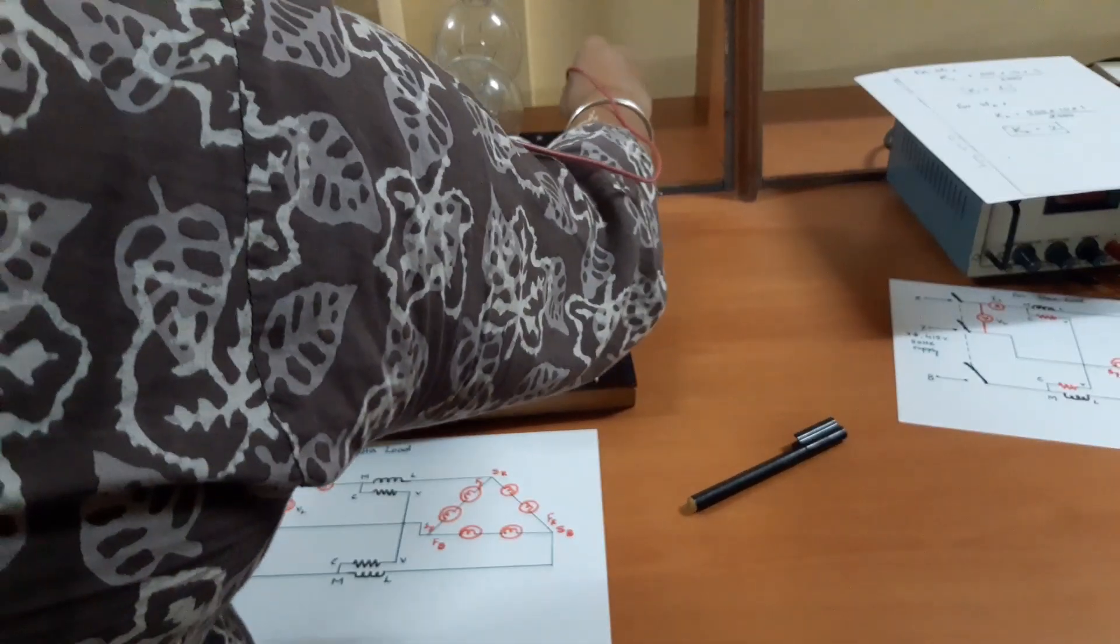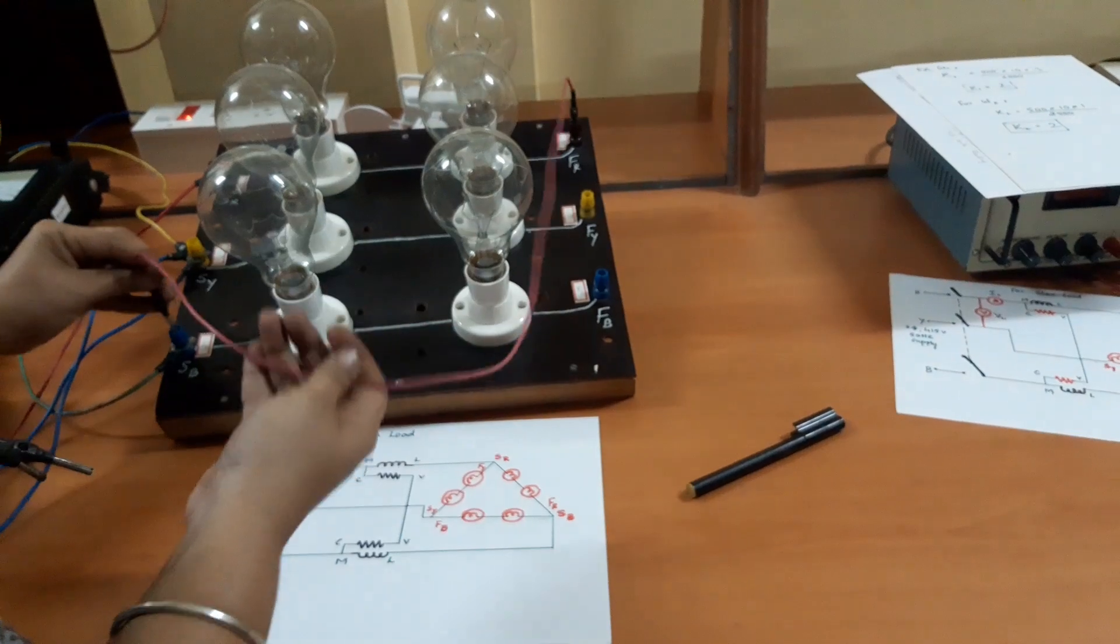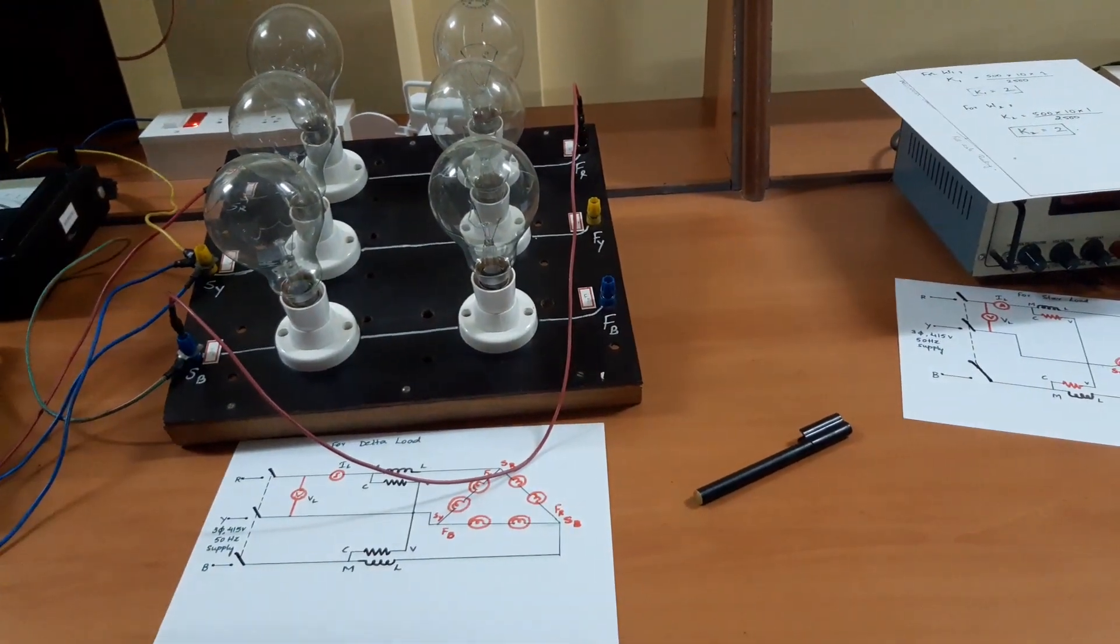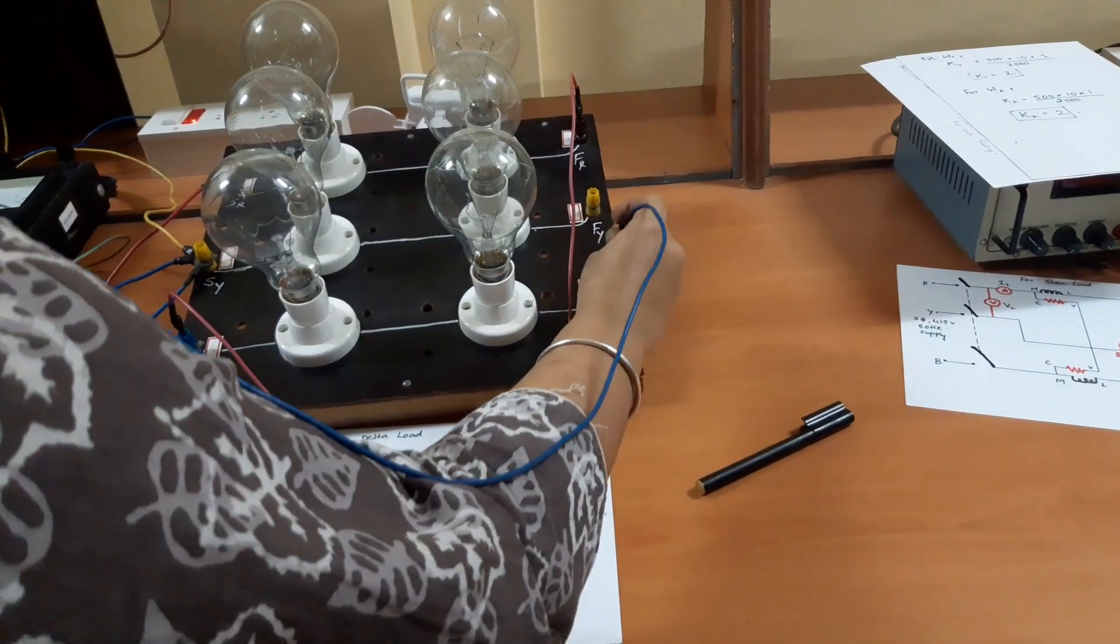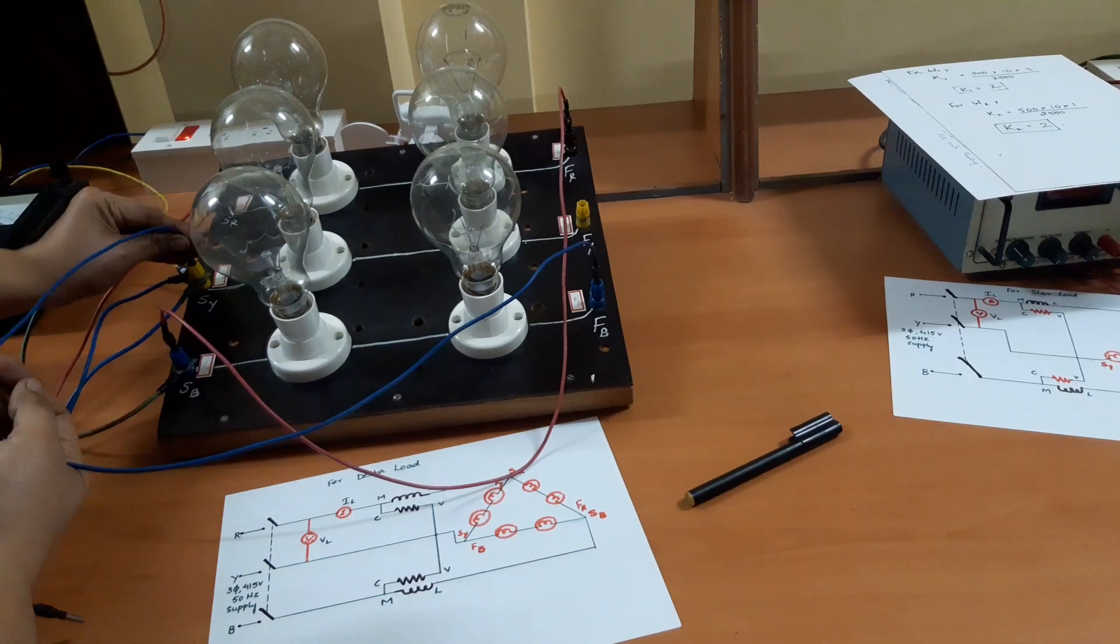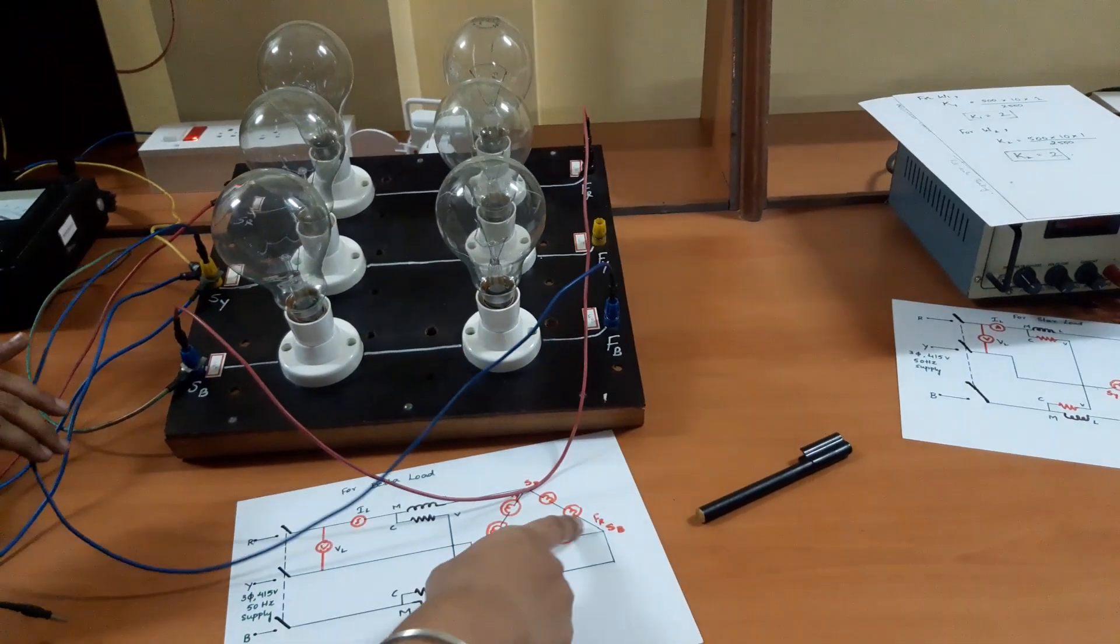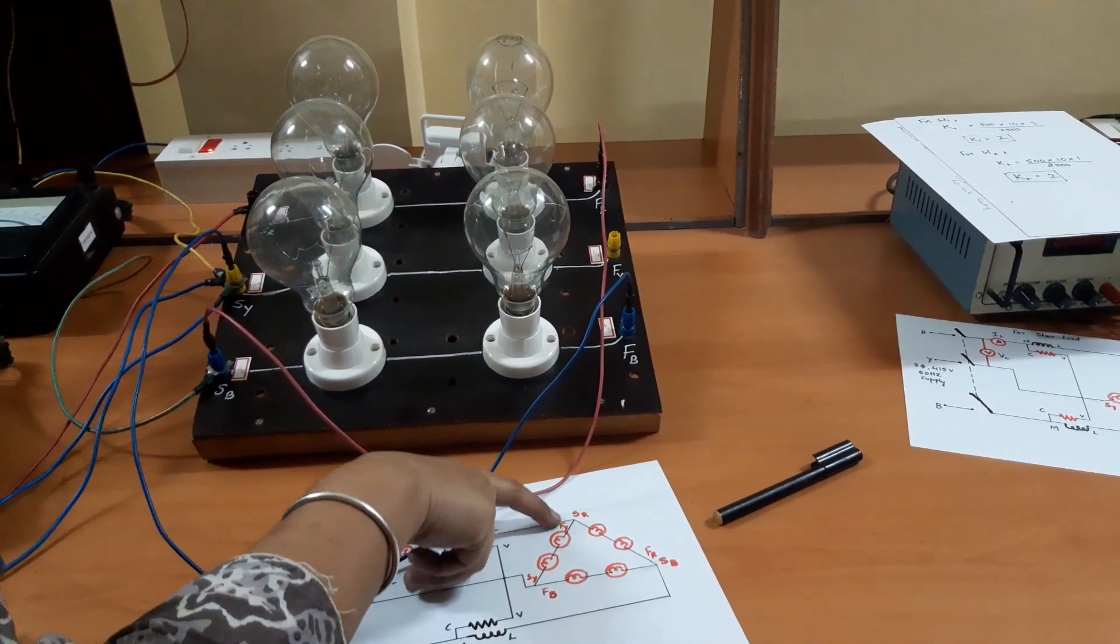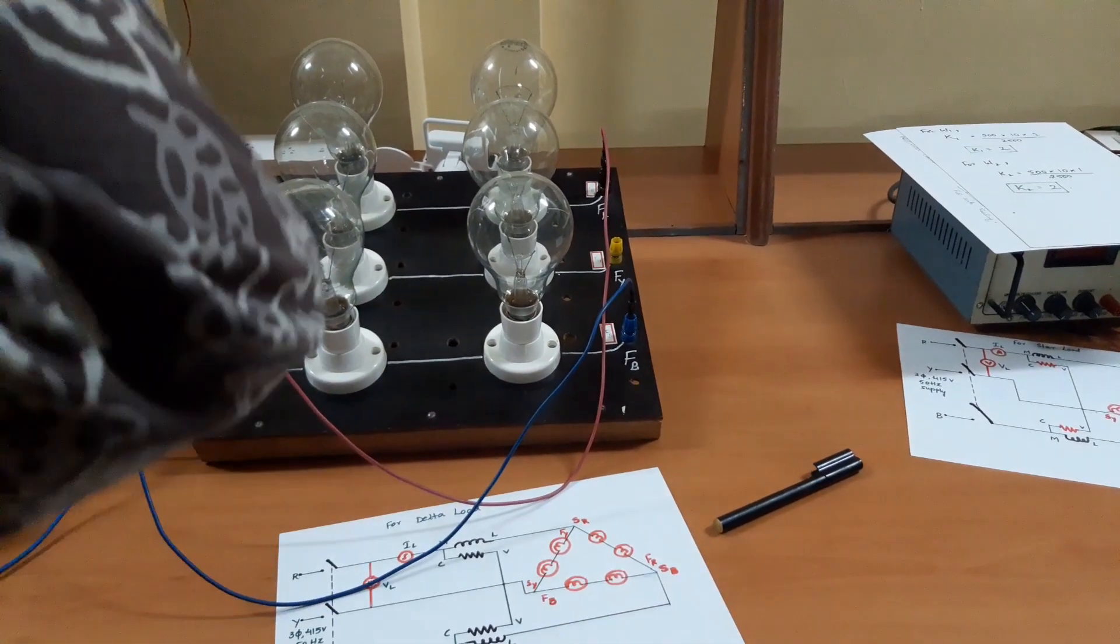SR to FR is done internally, from FR to SB. SB to FB is connected internally, then from FB we are connecting it to SY. SY is connected to FY internally and FY is further connected to SR.